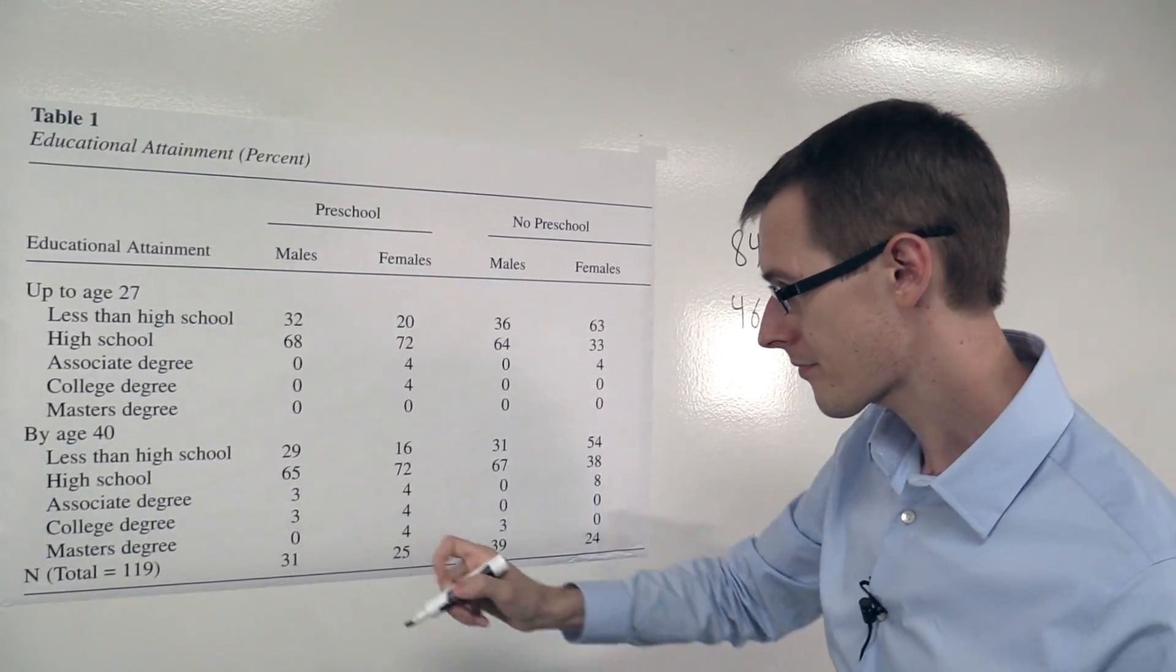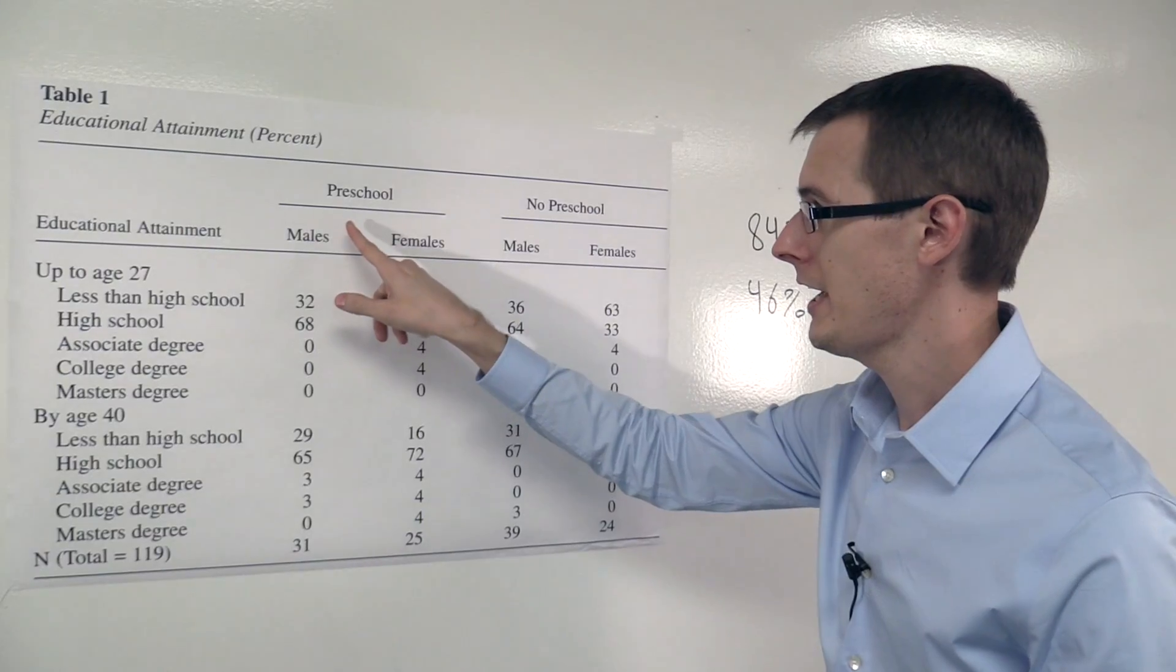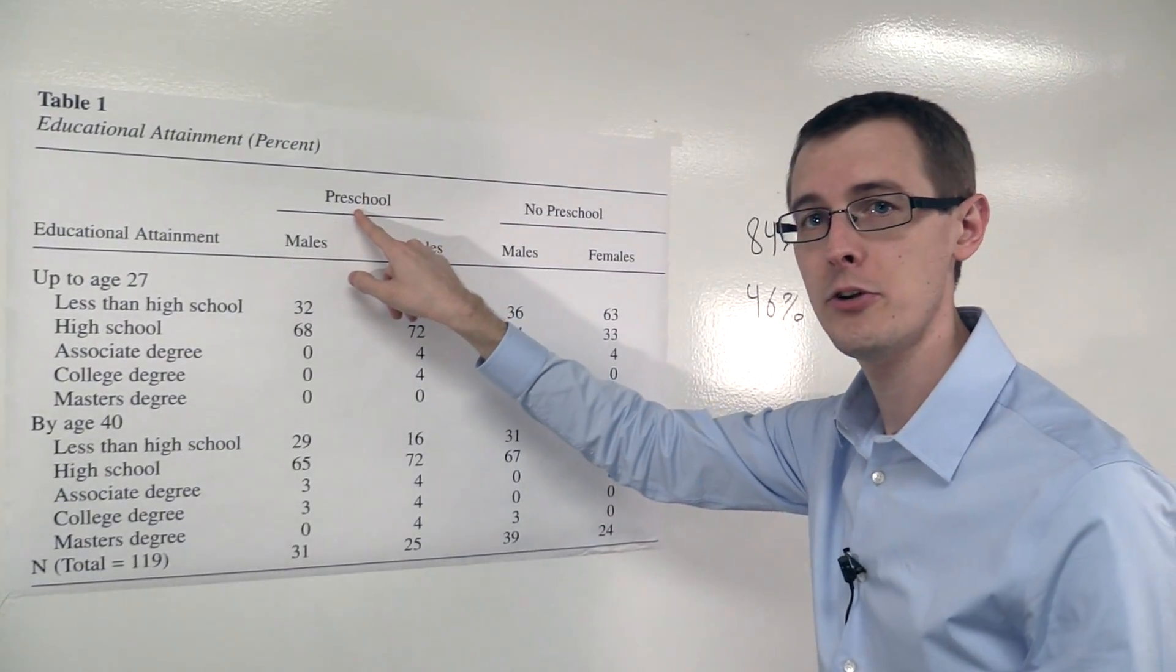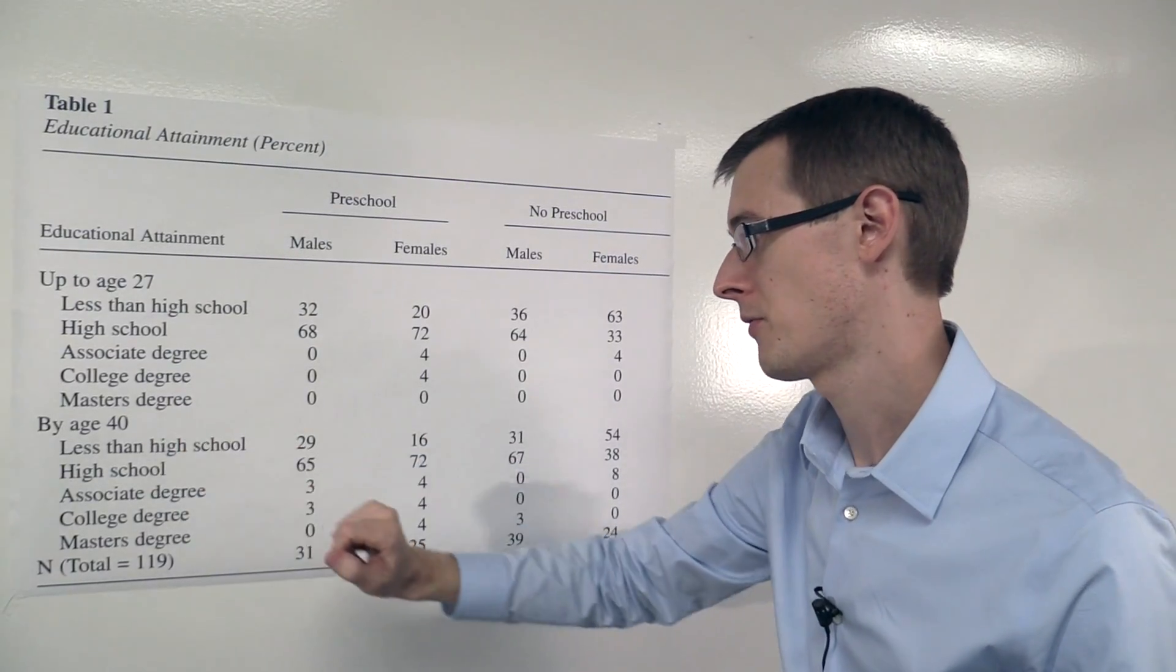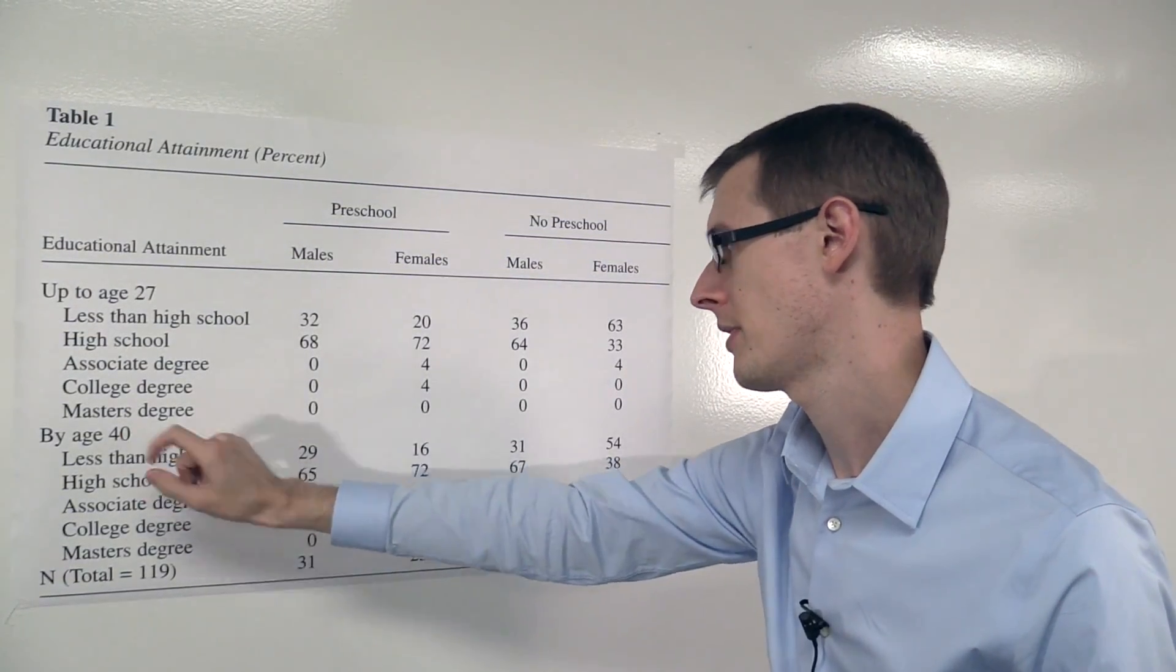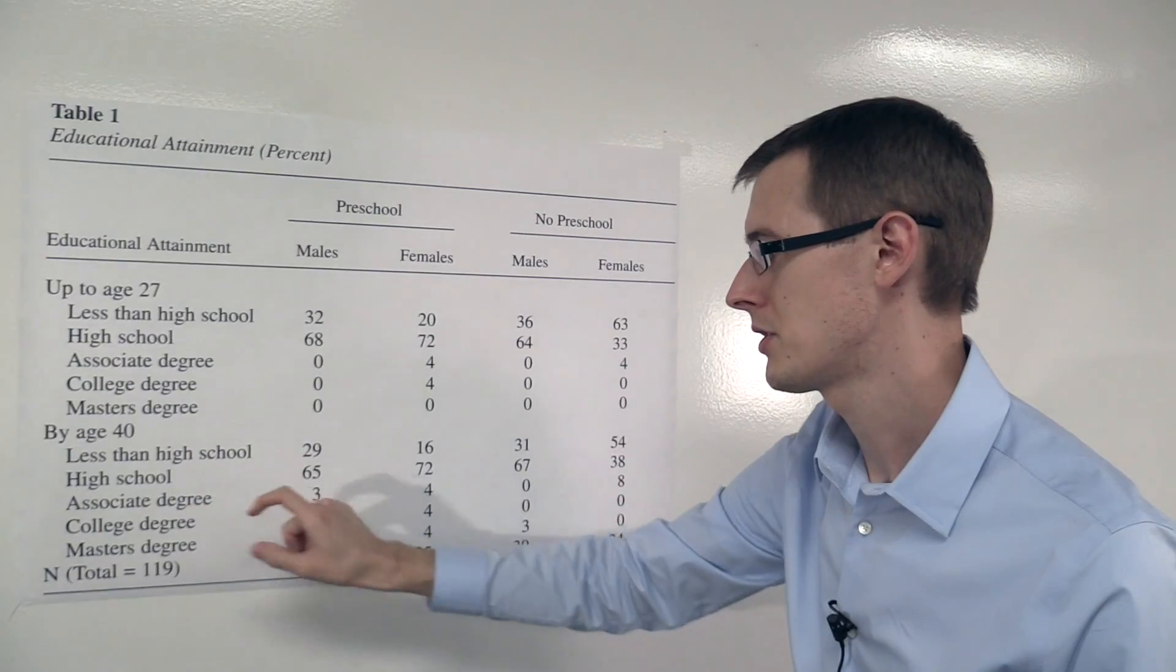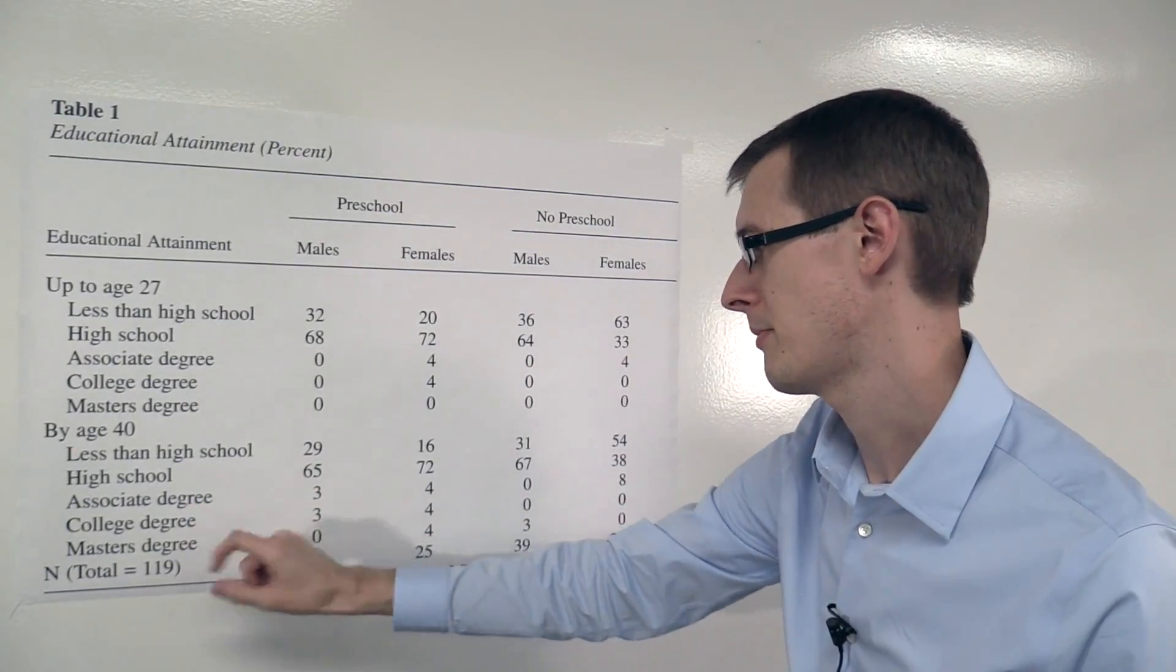Okay, over here we see males who got treated, who went to preschool. 29% had less than high school education by age 40. 65% had a high school education by age 40. 3% associate, 3% college, 0% master's.